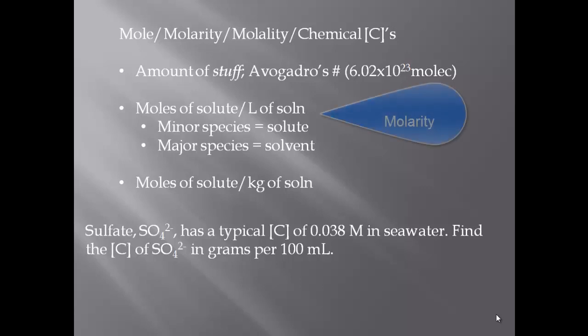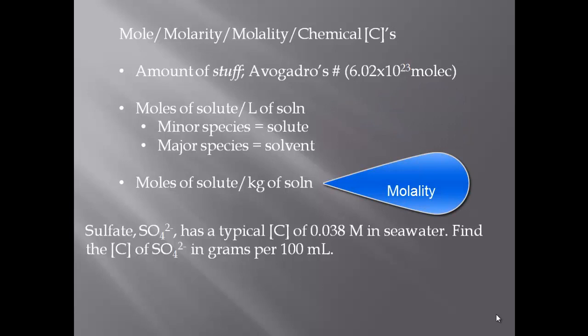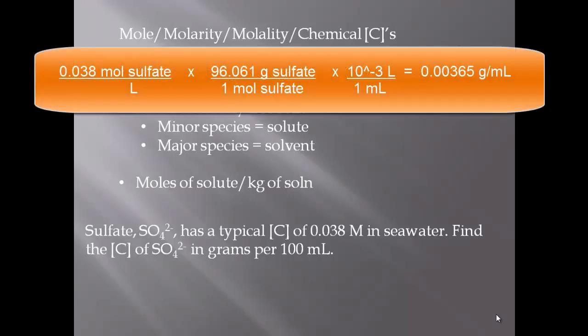You have two major types of concentration units: molarity, which is moles of solute per liter of solution, and molality, which is moles of solute per kilogram of solution. Molality is not used very often, but I'll give you the definition so you won't be confused if you see it in a problem. For practice, sulfate (SO₄²⁻) has a typical concentration of 0.038 M in seawater — find the concentration in grams per 100 mL. You start with 0.038 moles of sulfate per liter of solution.